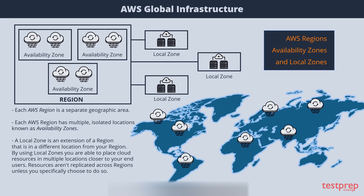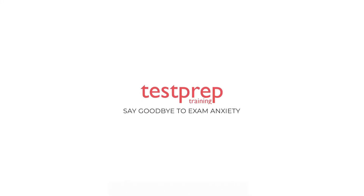AWS has state-of-the-art, highly available data centers, although rare failures can happen affecting the availability of resources in the same location. If you host all of your resources in a single location that is affected by a failure, none of your resources would be available. Using a local zone, you can place select services closer to your end users.